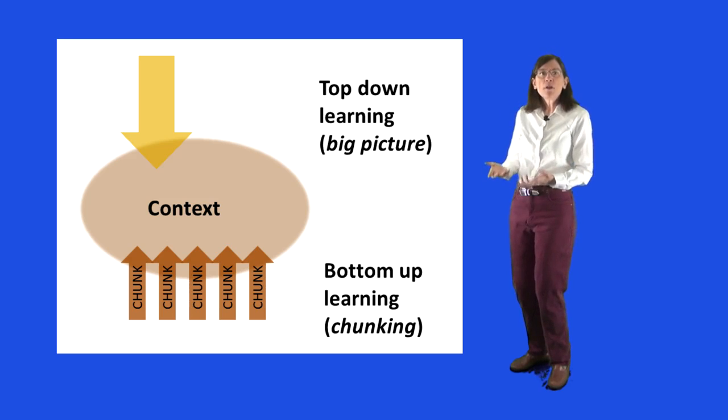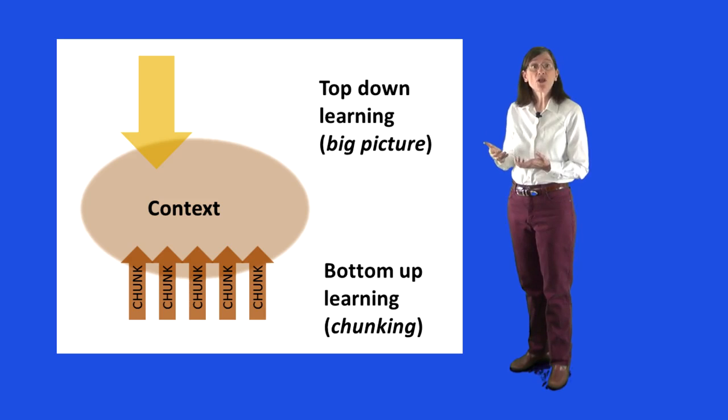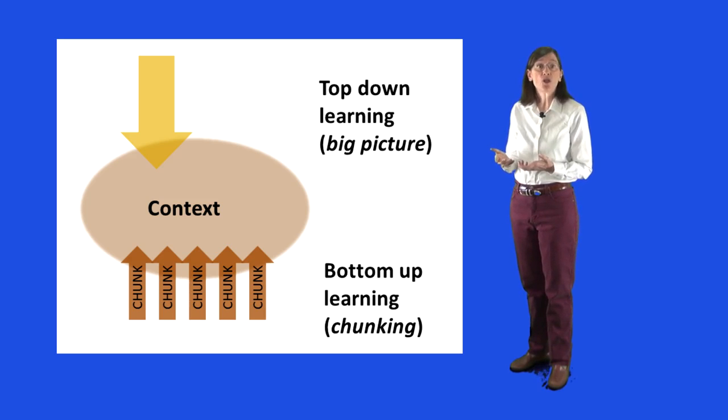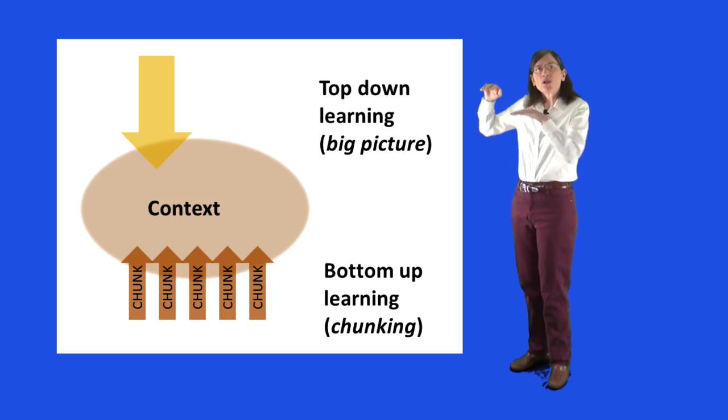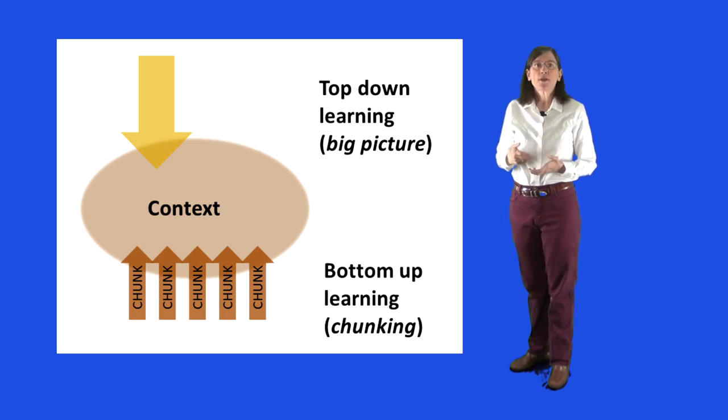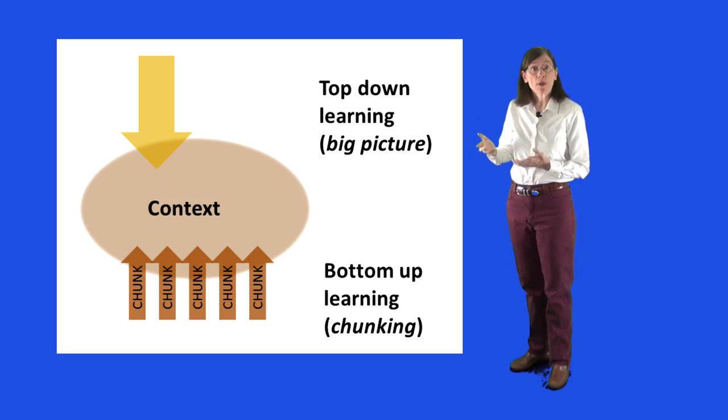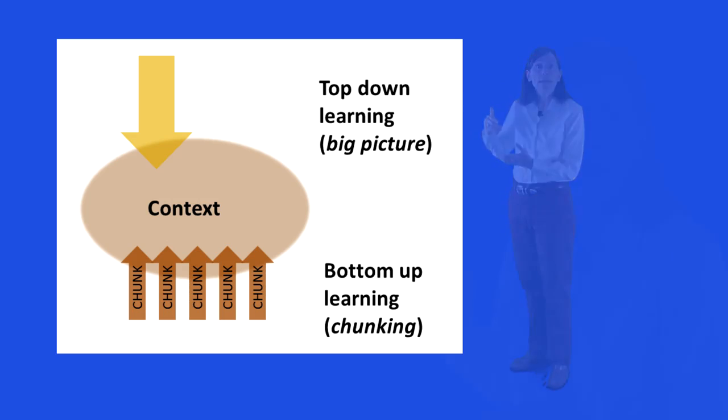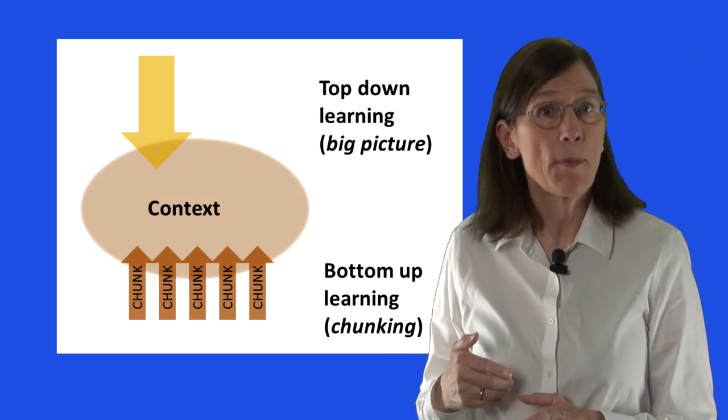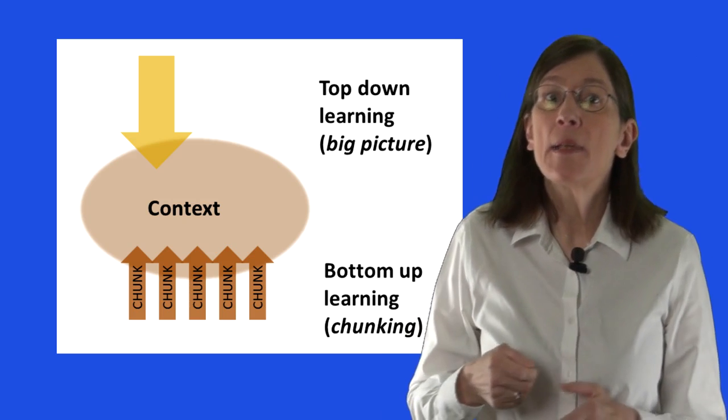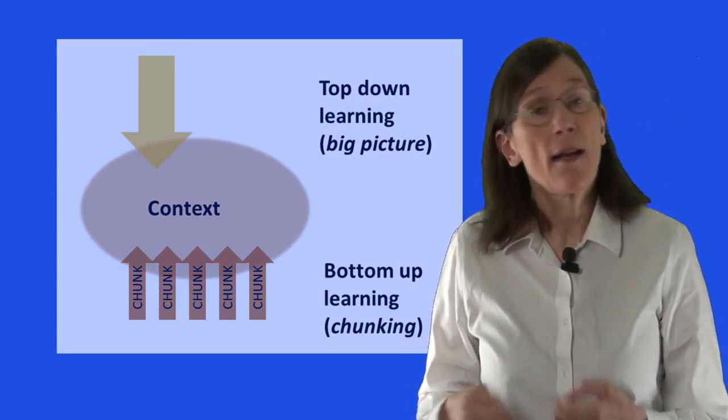There's a bottom-up chunking process where practice and repetition can help you both build and strengthen each chunk, so you can easily access it whenever you need to. And there's also a sort of a top-down, big picture process that allows you to see what you're learning and where it fits in. Both processes are vital in gaining mastery over the material. Context is where bottom-up and top-down learning meet. To clarify here, chunking may involve your learning how to use a certain problem-solving technique. Context means learning when to use that technique instead of some other technique.